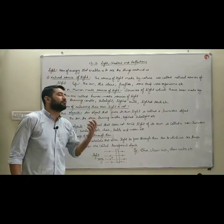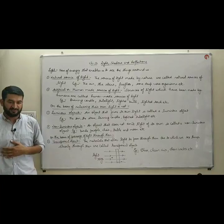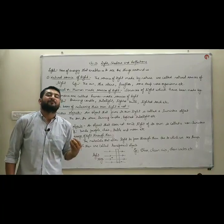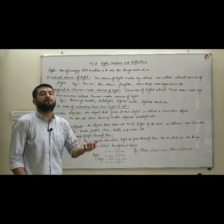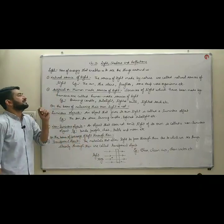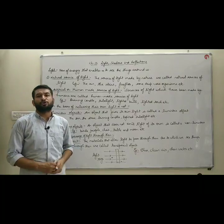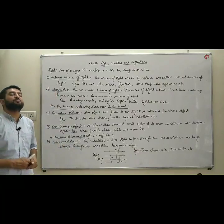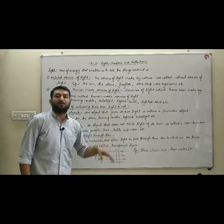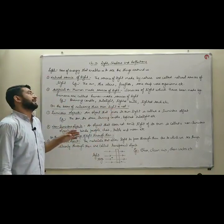Now the sources — the objects — are differentiated on various bases. First, on the basis of origin, where they originated. The first ones are natural sources of light: the sources of light which are made by nature, which occur in nature, are known as natural sources of light.